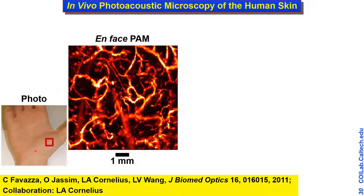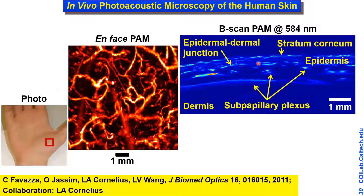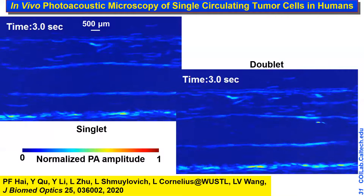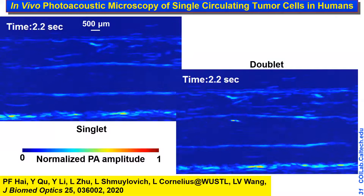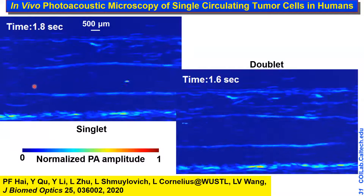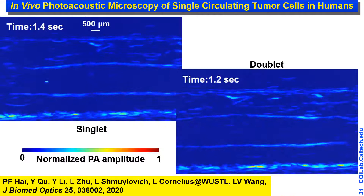Images acquired on the human palm show fast images and B-scan images displaying standard skin structures. We built a handheld version and took it to the clinic to image circulating tumor cells — since primary cancers don't necessarily kill patients, it's metastasis that's lethal. We started with melanoma CTCs because they're loaded with melanin and become easy targets. By choosing the right optical wavelength we get very high contrast, and we can see circulating tumor cells clearly in patients, offering new opportunities for early cancer detection or therapy monitoring.